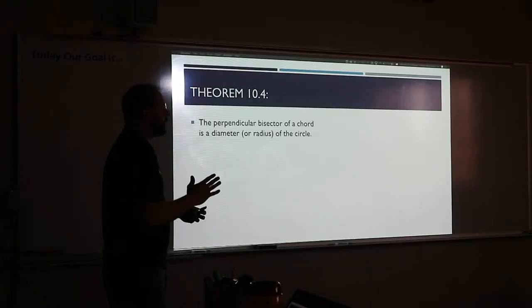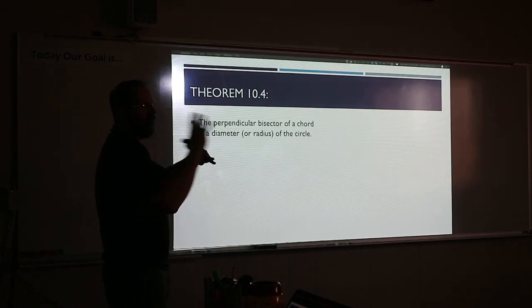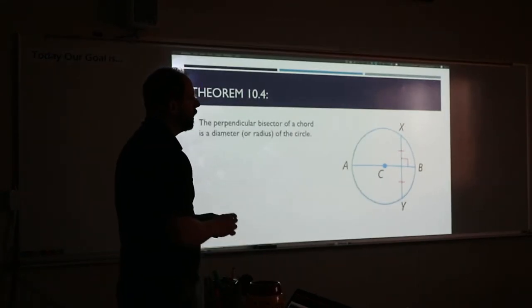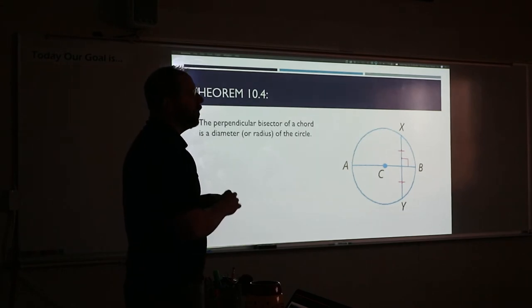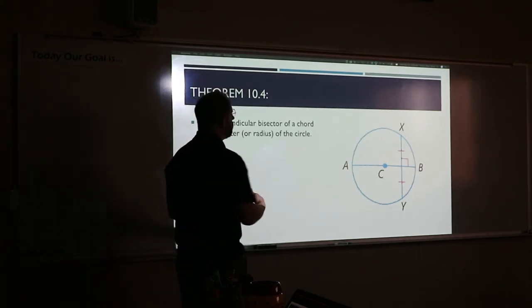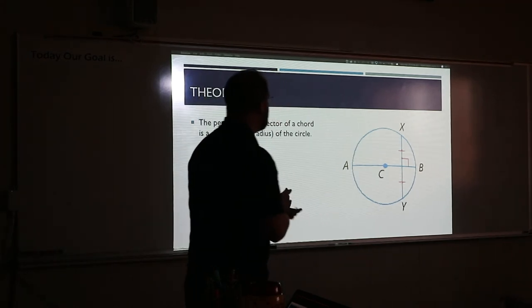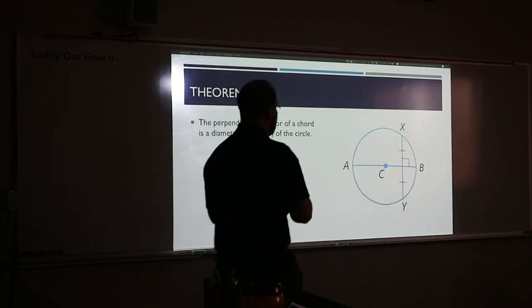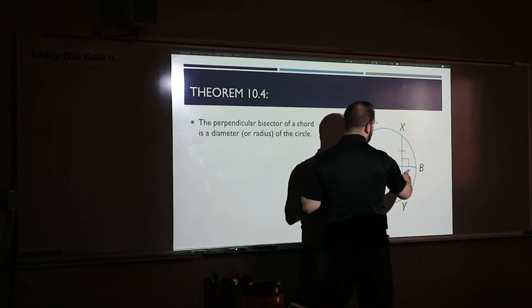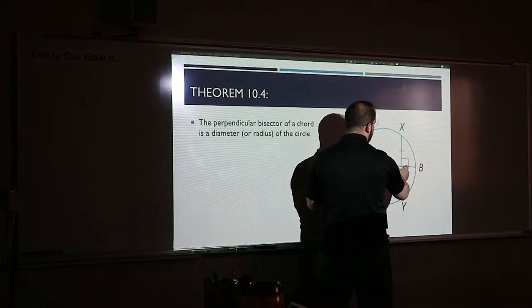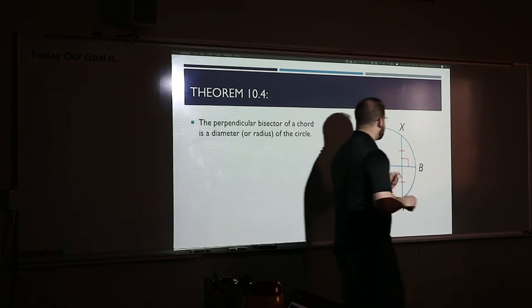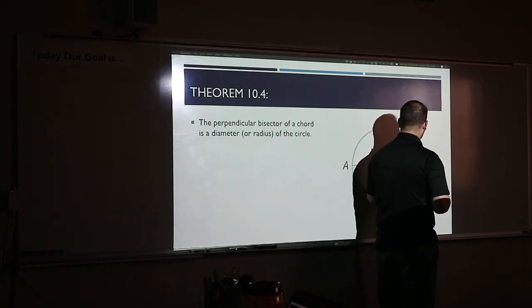All right, 10-4. This is one of the new ones we did on Friday. We talked about a perpendicular bisector — a line that is perpendicular and bisects a chord into two halves. If that's true, it had to be the diameter. Same exact idea as the problem we just did. The only thing I want to bring up on this one is what would happen to the actual arc itself.